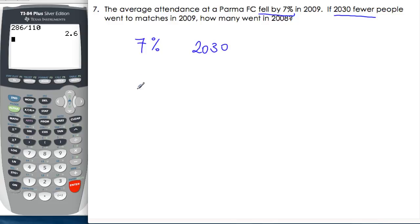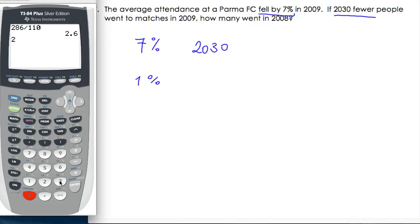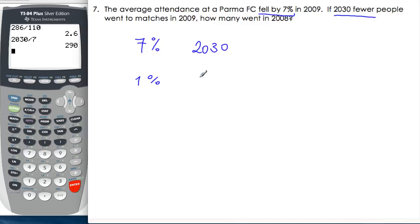Alright? And then, again, always work to what? 1%, dividing by 7. And then, what we want is how many in 2008, before the attendance dropped, so we want to go out to 100%, and therefore 29,000.